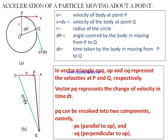Consider a point P at a distance r from the center O of a circle. At this instant, the velocity of point P is v, and this vector is perpendicular to OP. After a time interval dt, traversing angle dθ, the new position occupied is Q, and at this point the velocity is v + dv — meaning there is a change in velocity.